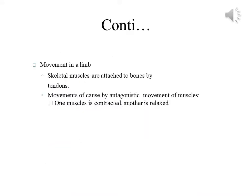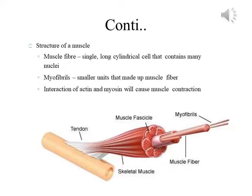Movement in the limb: skeletal muscles are attached to bones by tendons. Movement is caused by the antagonistic action of muscles — one muscle contracts while the other relaxes. The structure of a muscle consists of muscle fibers and myofibrils. Muscle fibers are single long cylindrical cells containing many nuclei, and myofibrils are the smaller units that make up muscle fibers. The interaction of actin and myosin causes muscle contraction.